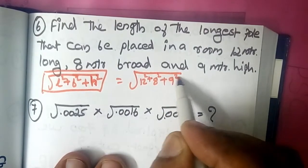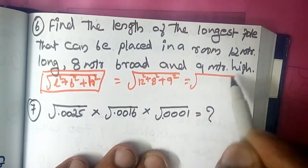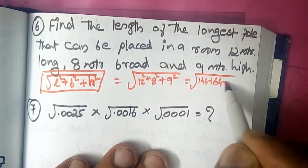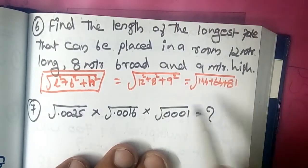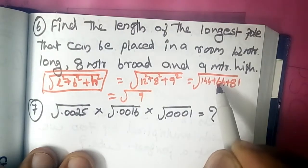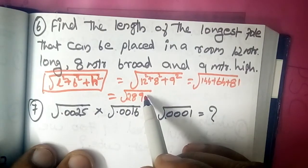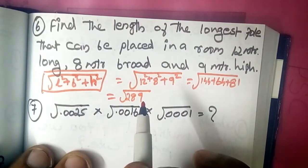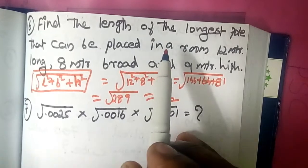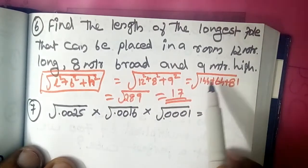Plus 9 meter height, that means 9 square. Now we have to calculate: root of 144 plus 64 plus 81. That gives root of 289. Root 289 equals 17. That means the longest pole of the room — 12m long, 8m wide, 9m high — is 17 meters.